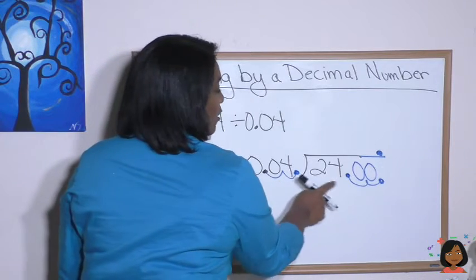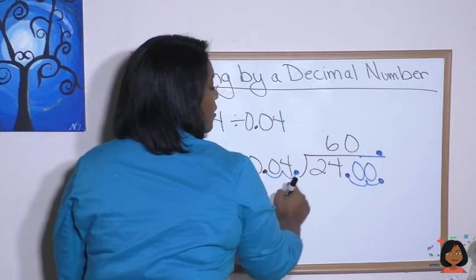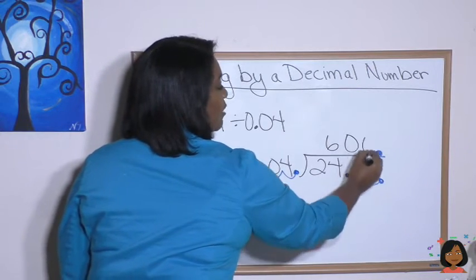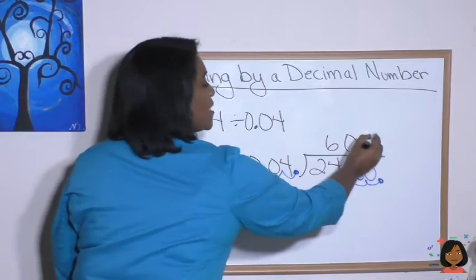We can do that. 4 goes into 24 six times. 4 goes into zero zero times. And 4 goes into zero zero times. That means that our answer is 600.